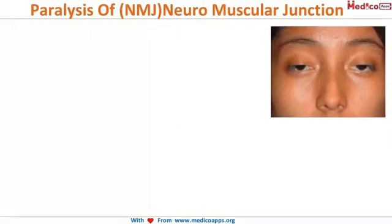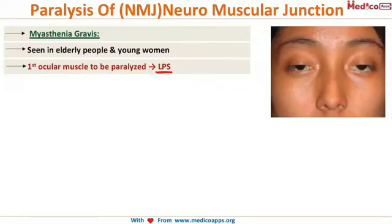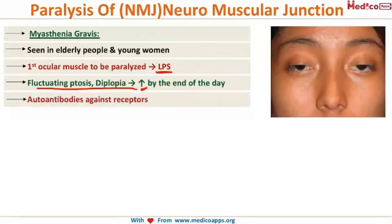The last condition is paralysis at the neuromuscular junction — myasthenia gravis. It is seen in elderly people and young women. The first muscle to be paralyzed is the levator palpebrae superioris. As the day progresses, myasthenic symptoms worsen, so patients experience more symptoms toward the end of the day. This produces a fluctuating ptosis and diplopia that increases by end of day — a characteristic feature of myasthenia gravis. It involves autoantibodies against neuromuscular junction receptors.